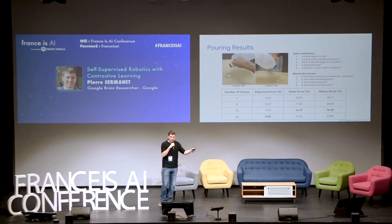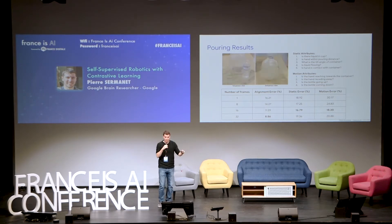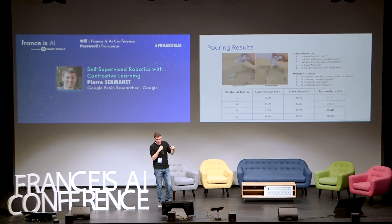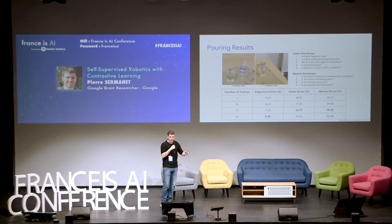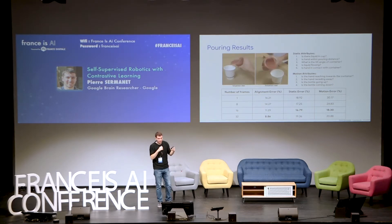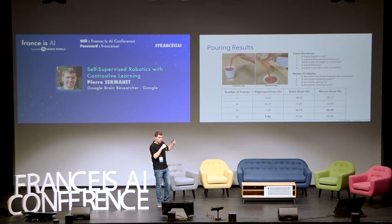We showed that we can discover motion attributes on the pouring dataset — such as whether the hand is going towards the cup, receding away from it, or going up and down. We also showed that using motion actually helped us do a better job at classifying the static attributes as well.